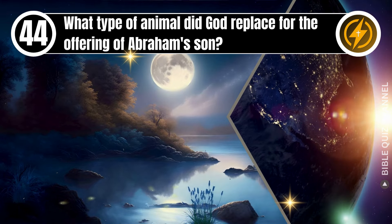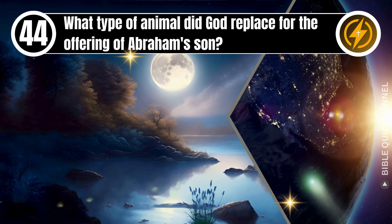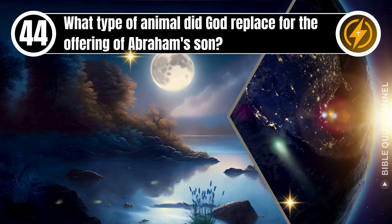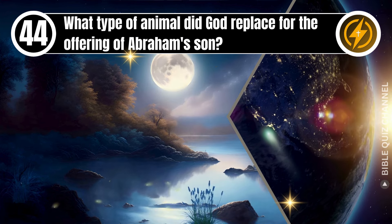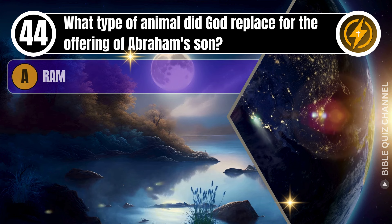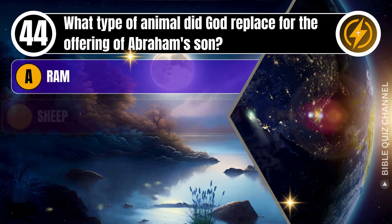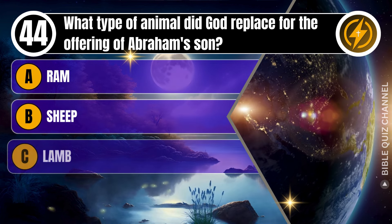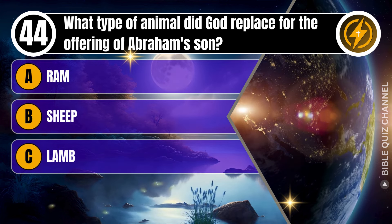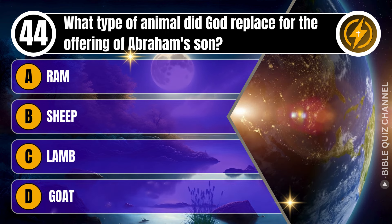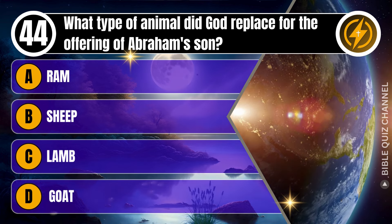Question 44. What type of animal did God replace for the offering of Abraham's son? A. Ram. B. Sheep. C. Lamb. D. Goat. You get 10 seconds.